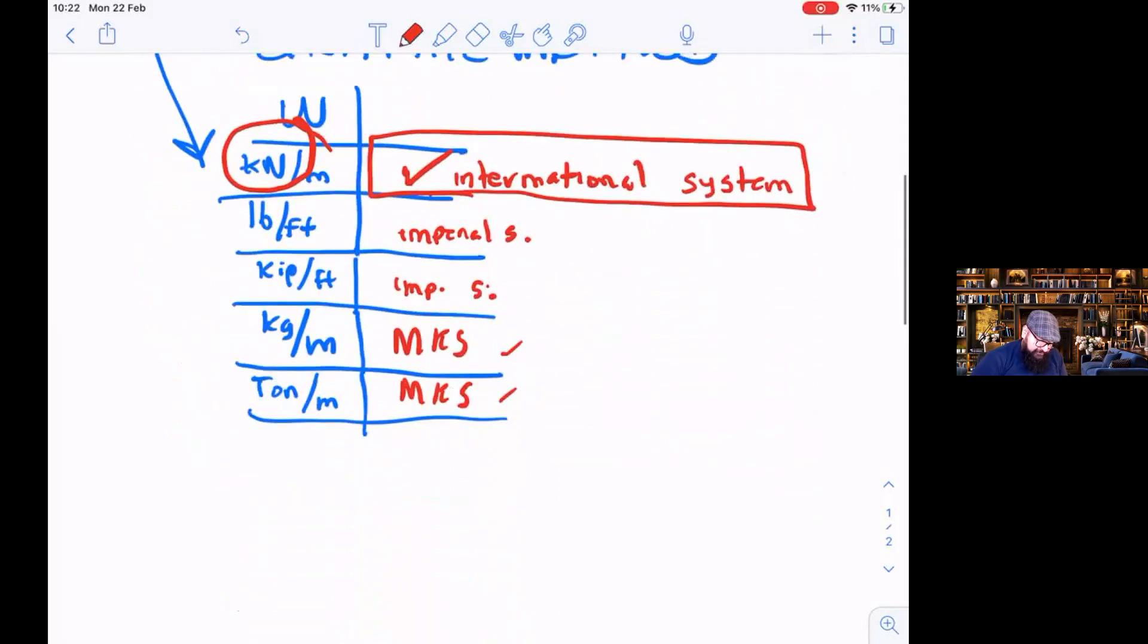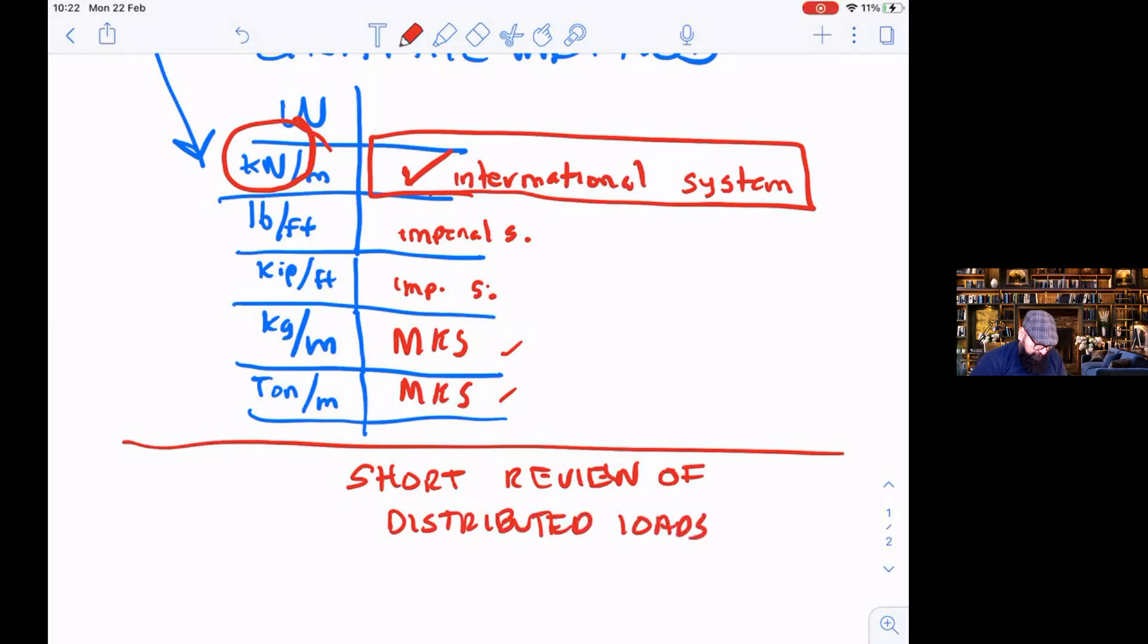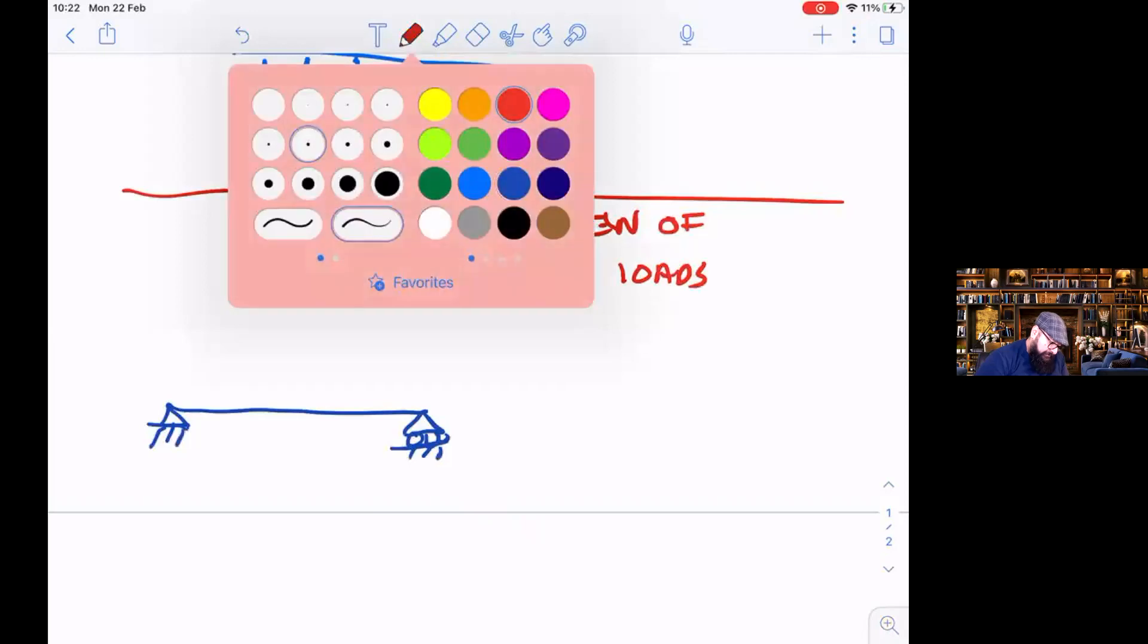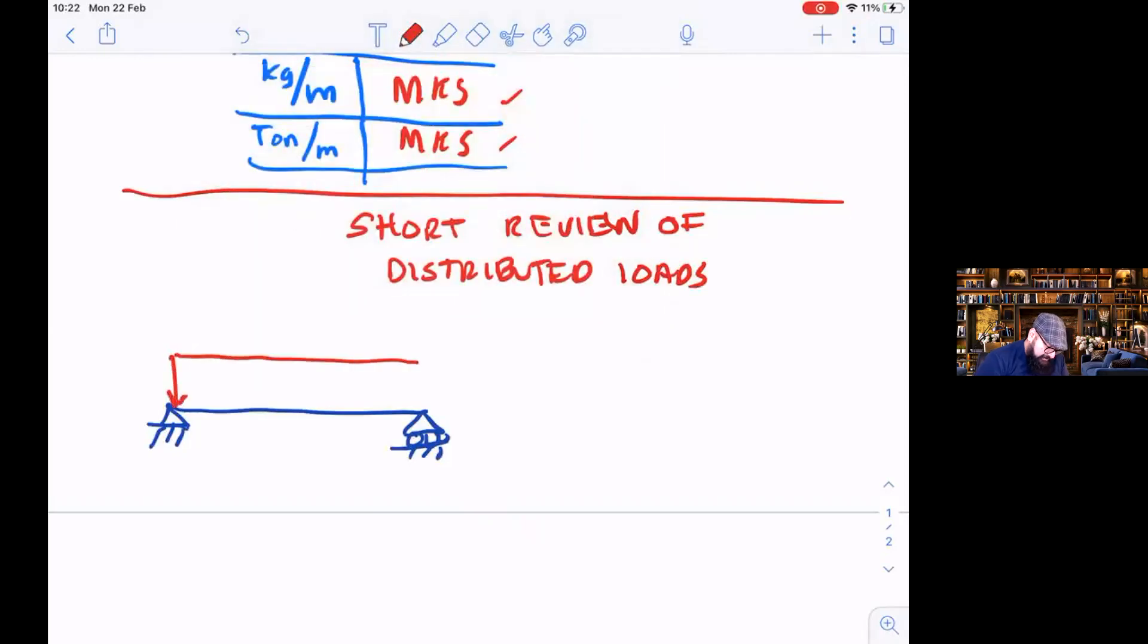So this is just a small or short review of distributed loads. For instance, if I have that beam, I have here rectangle. This distributed uniformly distributed load is a rectangle like this. We can easily find that this is a rectangle.